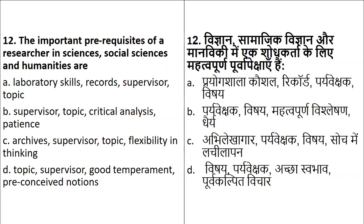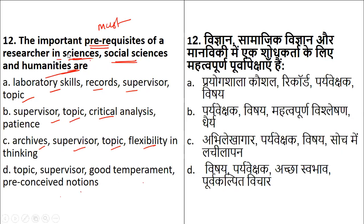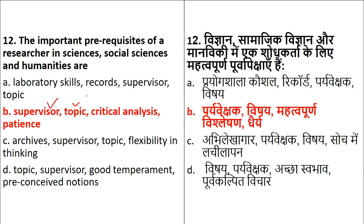Next question: the important prerequisites of a researcher in sciences, social sciences, and humanities. Options include: laboratory skills and records; supervisor and topic; critical analysis, archives, and supervisor topic; or flexibility, topic, supervisor, good temperament, and preconceived notion. From the given list, the prerequisites required across sciences, social sciences, and humanities will be supervision, the topic, critical analysis, and patience.